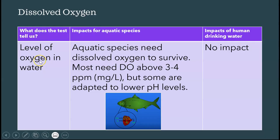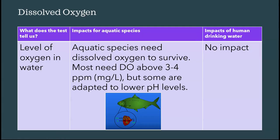Dissolved oxygen is obviously the level of oxygen in the water. You can see a picture here of gills — the water goes through their gills and captures dissolved oxygen. Living things need oxygen; consumers need oxygen to survive. Most aquatic species need above three to four parts per million, which is equivalent to milligrams per liter. Some are adapted to lower dissolved oxygen levels, but the vast majority need above that. For drinking water, there's really no impact — it's not a water quality standard for human drinking water.